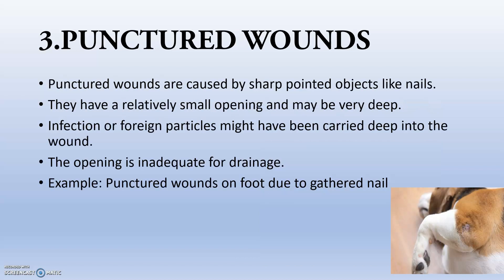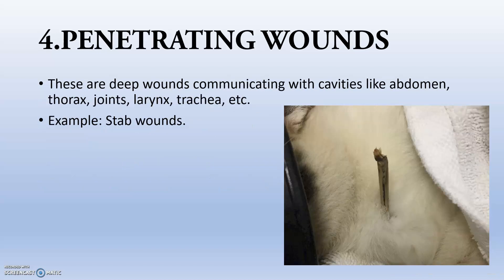A punctured wound is caused by sharp pointed objects like nails. It has a relatively small opening but can be a very deep wound. The opening is inadequate for drainage. An example is a punctured wound on the foot due to a gathered nail. A penetrating wound, also called a stab wound, is a deep wound communicating with cavities like the abdomen or thorax due to the large structure of the stabbing object.